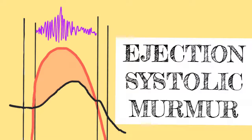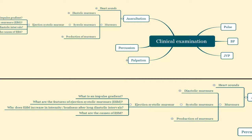Now before going through this video, I would suggest you to go check out my old video on production of heart murmurs. It is a very essential and crucial video to understand the basis, the fundamentals of murmur production. We're in clinical examination under which we're talking about auscultation and we are going to be talking about a particular systolic murmur called ejection systolic murmur.